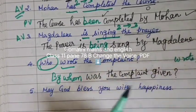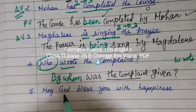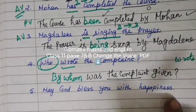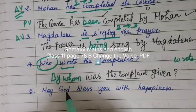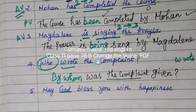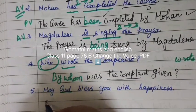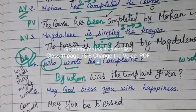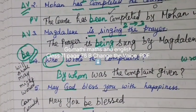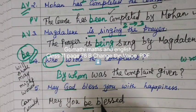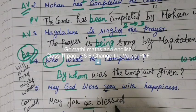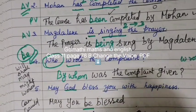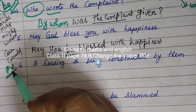Next: 'May God bless you with happiness.' This is active voice. In passive, we write: 'May you be blessed by God with happiness.' With modal verbs like may, will, shall, can — the structure is: modal + 'be' + V3. So 'may you be blessed by God' is the passive voice form.